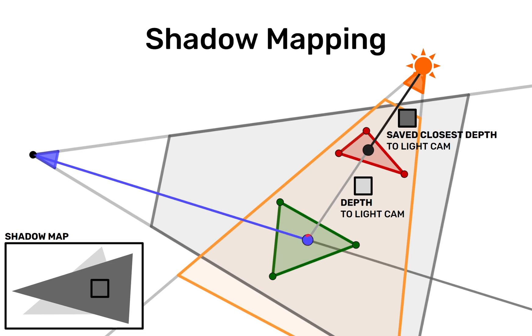And now we have two depths. The depth of the current fragment to the light source and the closest saved depth along that ray to the light source. And now we can just compare them.